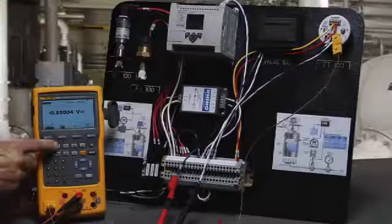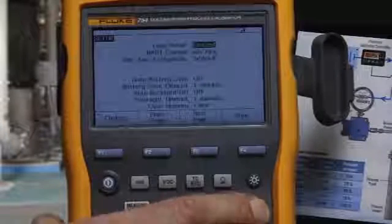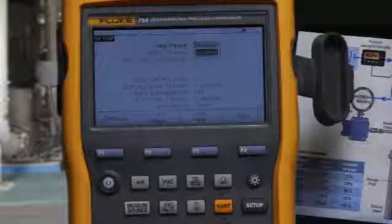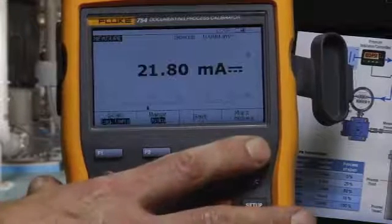To start the test, we want to measure milliamps and turn on loop power. Setup, enter, enabled.